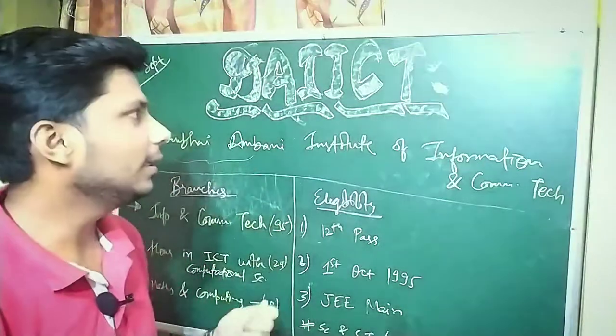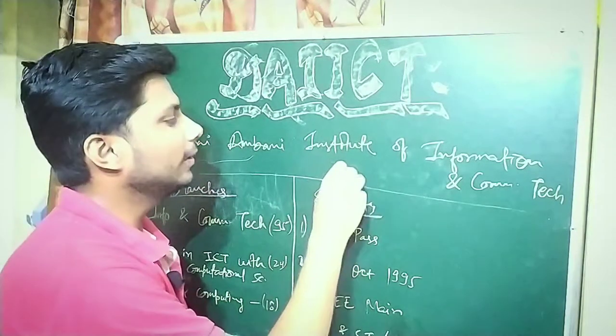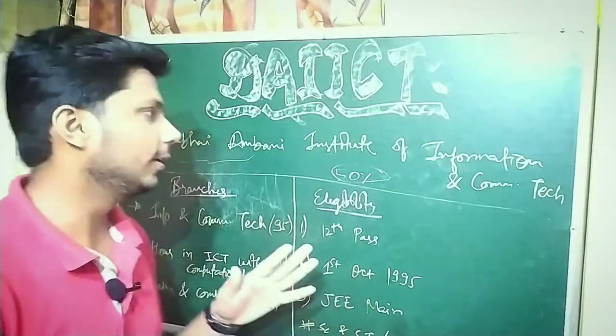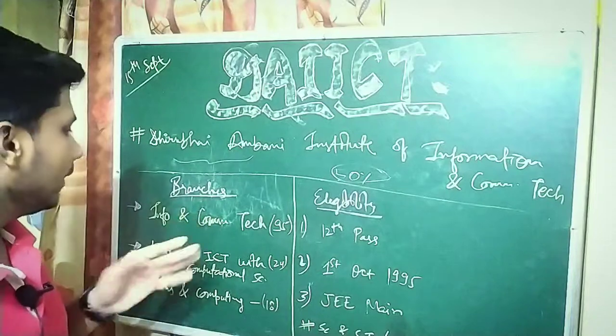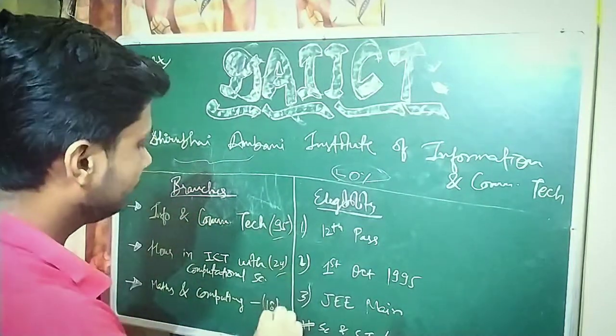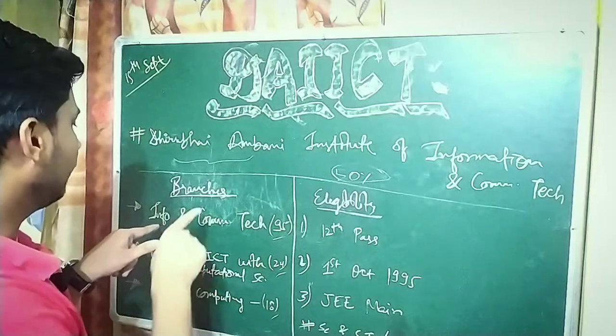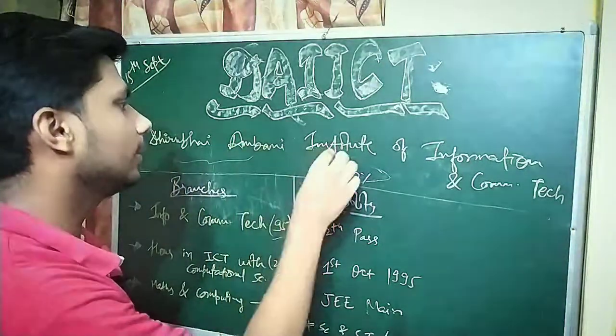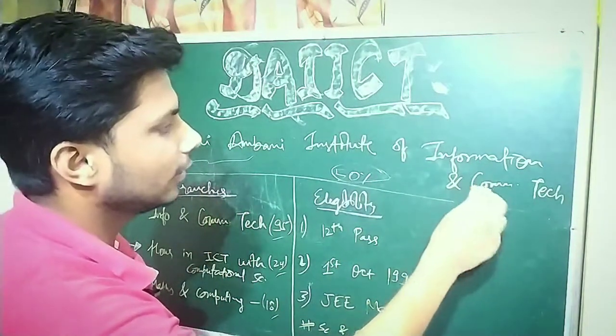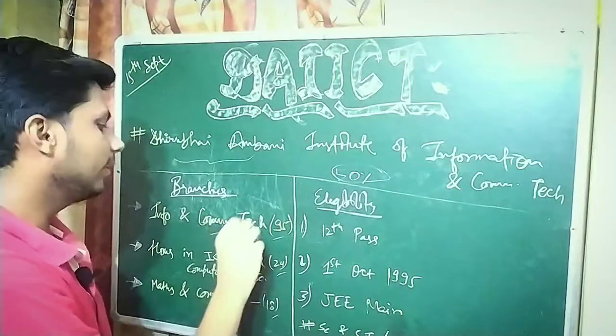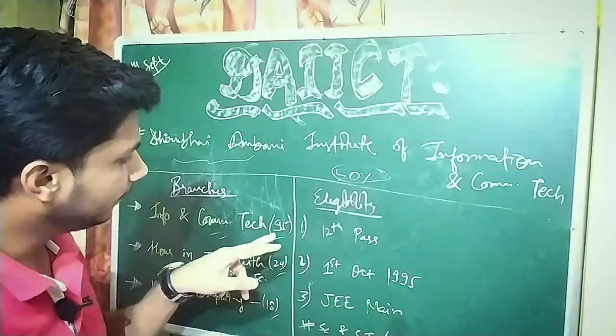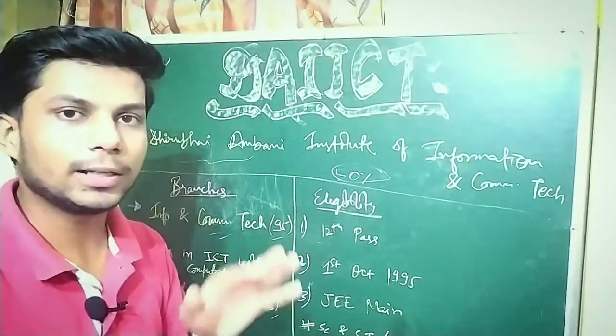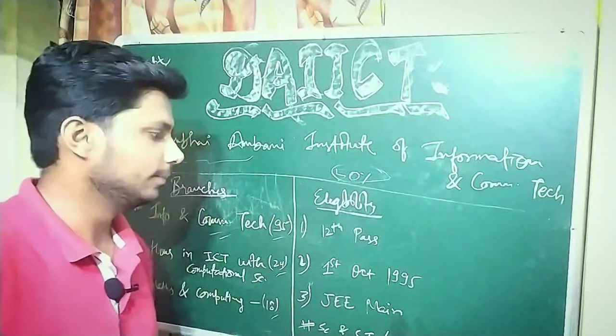It is in Gujarat and 50% of the seats are reserved for Gujarat candidates and 50% is for all India candidates. There are three different branches. The first branch is Information and Communication Technology, which is the main branch of the institute. There are 95 seats total, with around 47-48 seats reserved for Gujarat and 47-48 seats reserved for all India candidates.